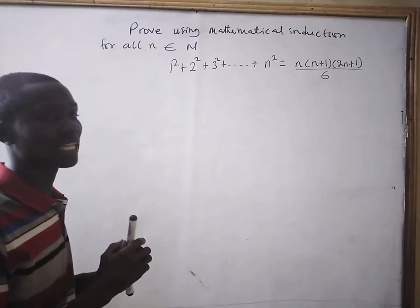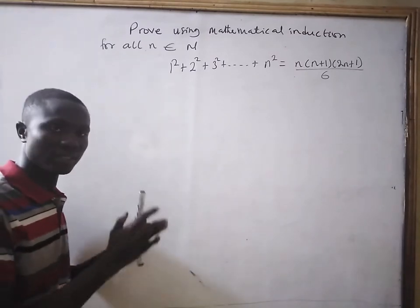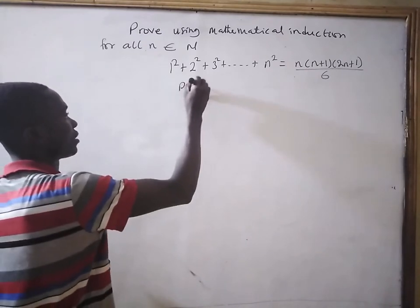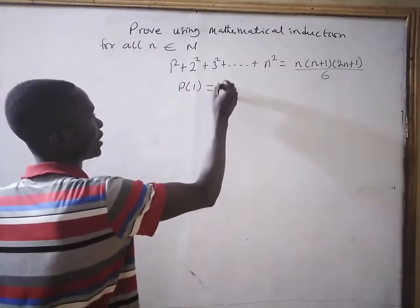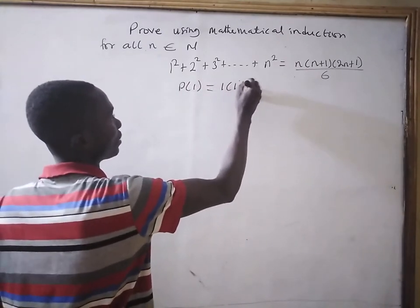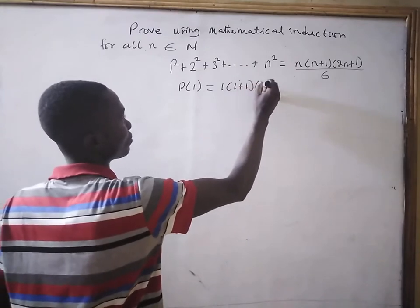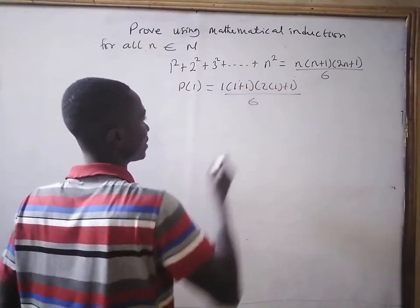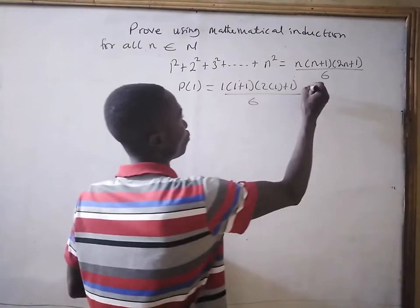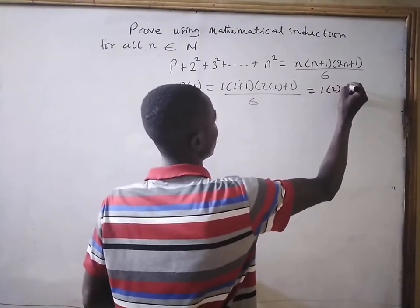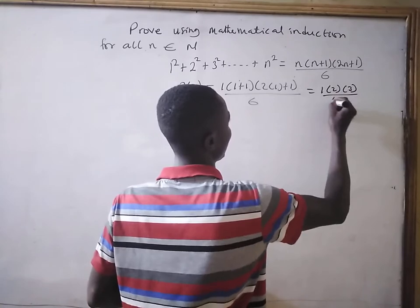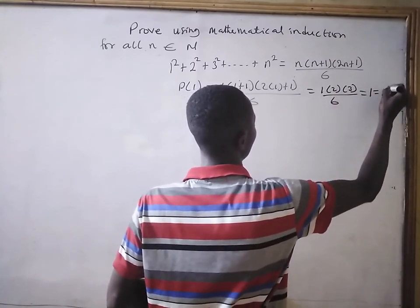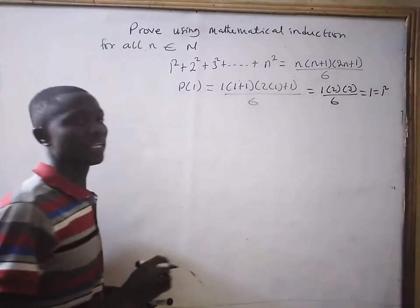Now, we will first start with the base case. That is, if we take P(1), we are going to get 1 times (1 plus 1) times (2 times 1 plus 1) all divided by 6, which will give us 1 times 2 times 3 divided by 6, which is equal to 1, and is equal to 1 squared. So P(1) is true.